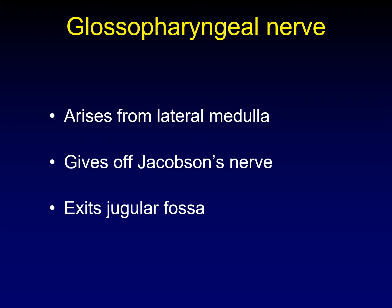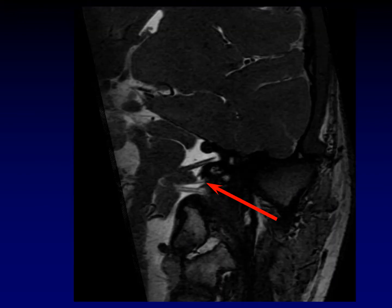Anatomically, the glossopharyngeal nerve arises from the lateral aspect of the medulla. It gives off Jacobson's nerve that runs through the tympanic cavity and has some important pathologic implications. After traversing the lateral medullary cistern, the glossopharyngeal nerve exits through the jugular fossa, specifically the pars nervosa. On this oblique steady state free precession sequence, you can see the glossopharyngeal nerve traversing the lateral medullary cistern, just above the duplicated vagus nerve.